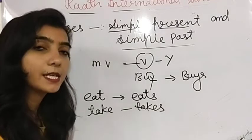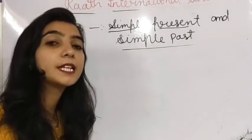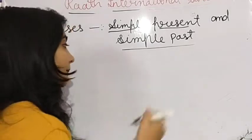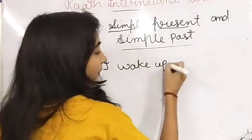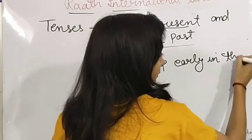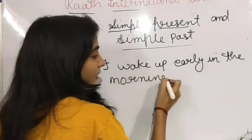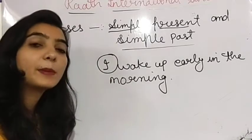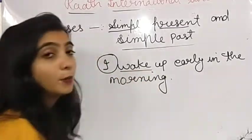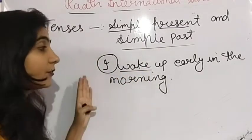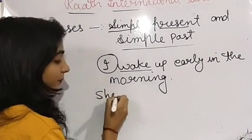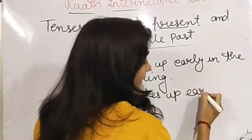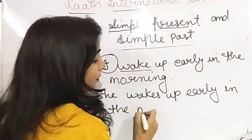Now let's look at simple present tense with some examples. For regular habits, for example: 'मैं सुबह जल्दी उठती हूँ' — I wake up early in the morning. Here, the subject is 'I' (plural pronoun), so we use only verb first form. But if we use a singular subject like 'she', we add S: she wakes up early in the morning.